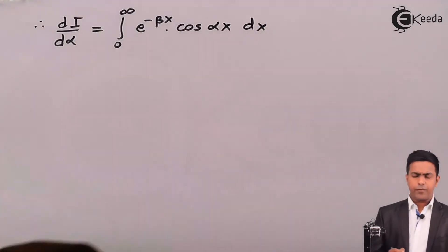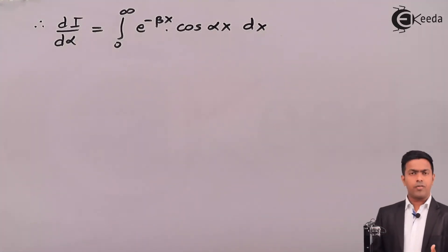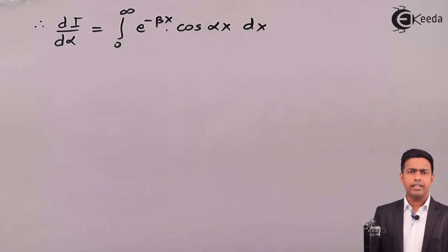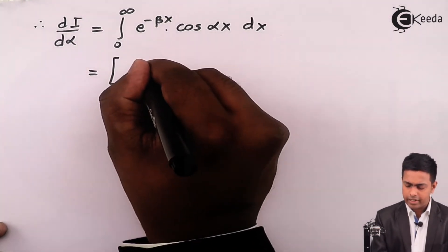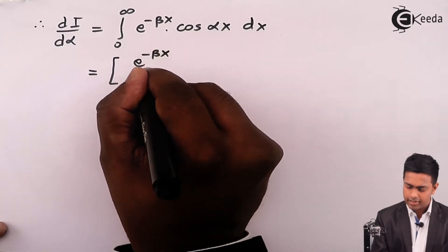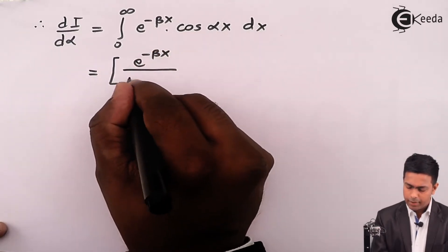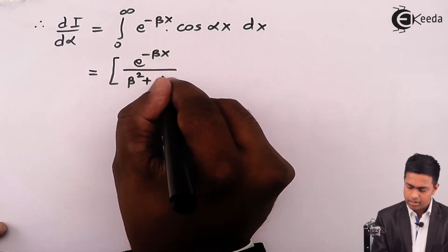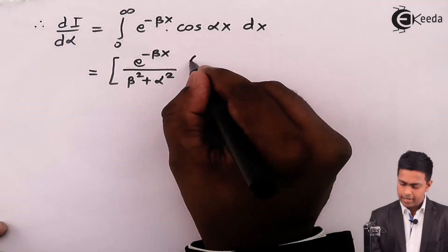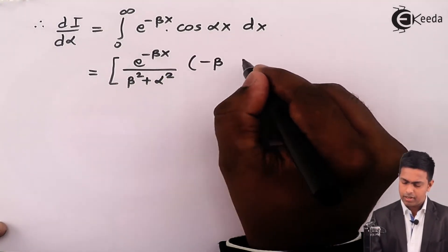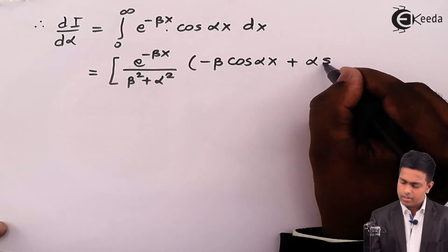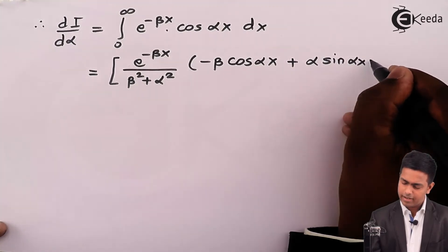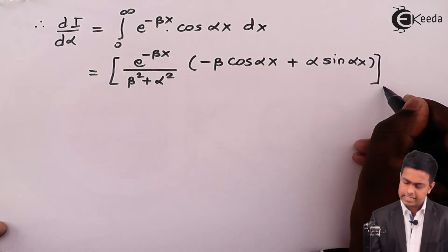Now we can directly apply the standard integration property which you studied in 12th standard. By applying that property, we get: e raised to minus beta x upon (beta squared plus alpha squared), in bracket minus beta cos(alpha x) plus alpha sin(alpha x). This is the standard result.